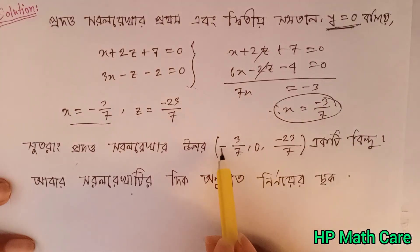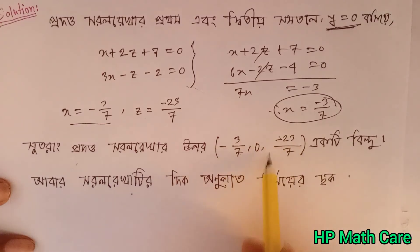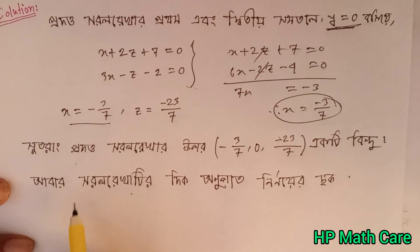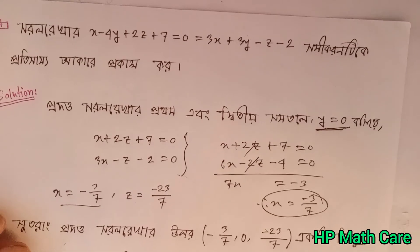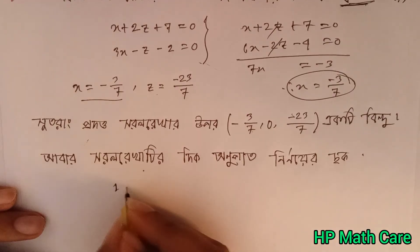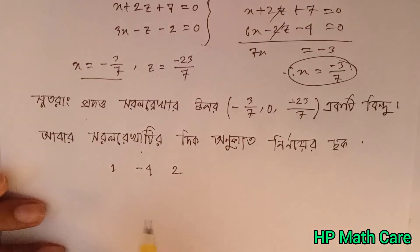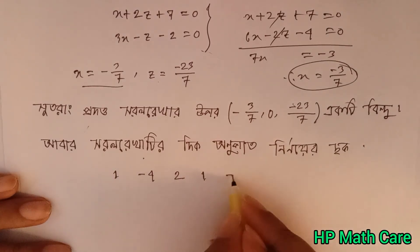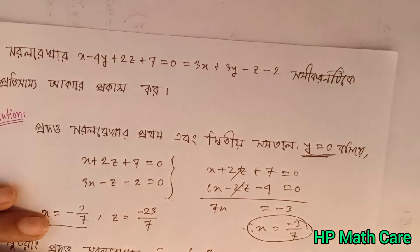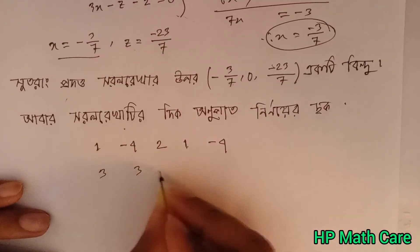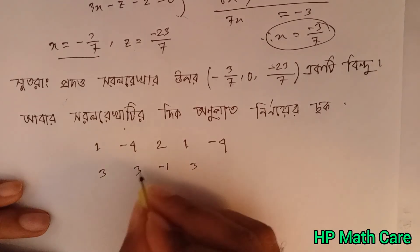So we get minus 3 by 7, zero, minus 23 by 7. The result is: minus 3 by 7, zero, minus 23 by 7. Coming back to this, the new point is: one, minus four, two. Then: one, minus four, and three, three, minus one.